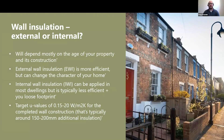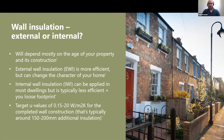With wall insulation, the first question is external or internal. External is typically more efficient — if you think of wrapping a continuous layer of insulation around a building, it's a more efficient way of reducing heat loss. Typically you're looking at between 150 and 200 millimetres of insulation, finished with external render, but you can also finish it in timber cladding or brick slip.